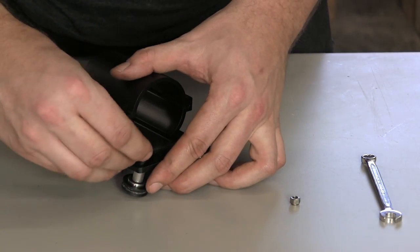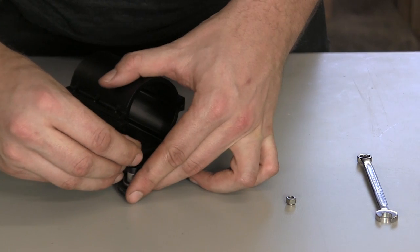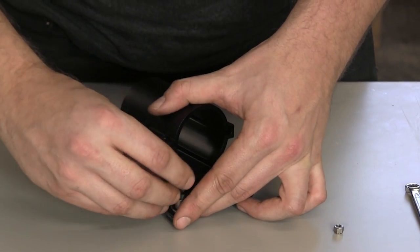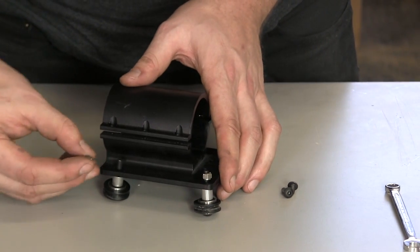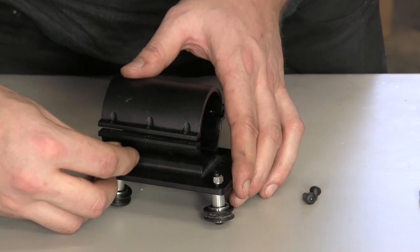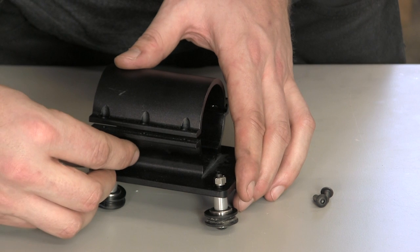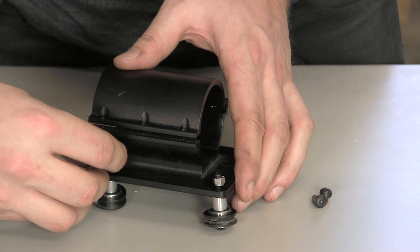You want to make sure that the shoulder of the eccentric nut faces the plate. When threading on the eccentric nuts, be sure that the shoulder seats inside of the larger hole.